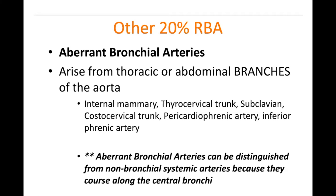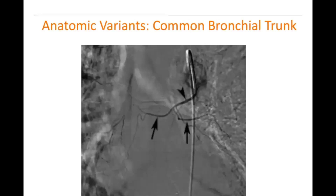The way you can tell the difference between aberrant bronchial arteries — those arising off the aorta not from an intercostal bronchial trunk — is that they course along the central bronchi. They follow the path where bronchial arteries would be expected, hugging the bronchi, rather than following other systemic distributions. We'll see some images to make that clearer.